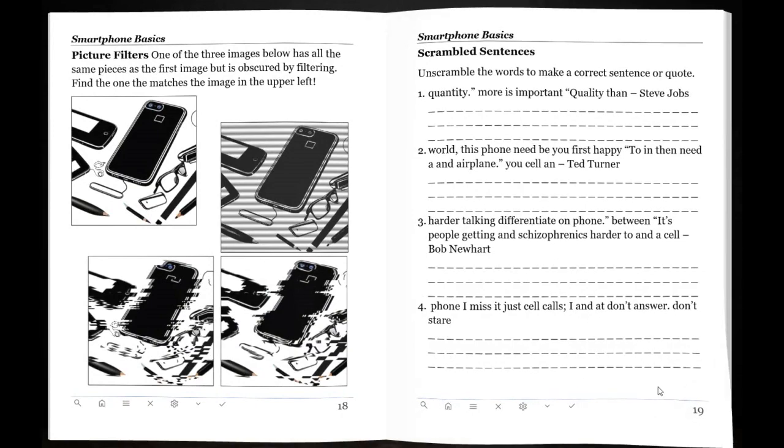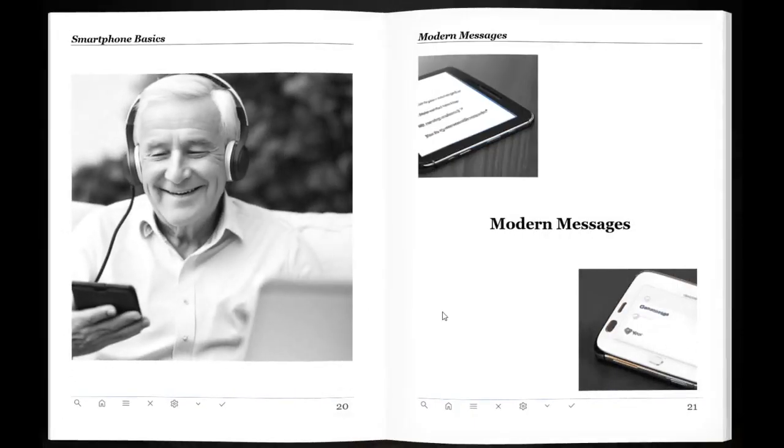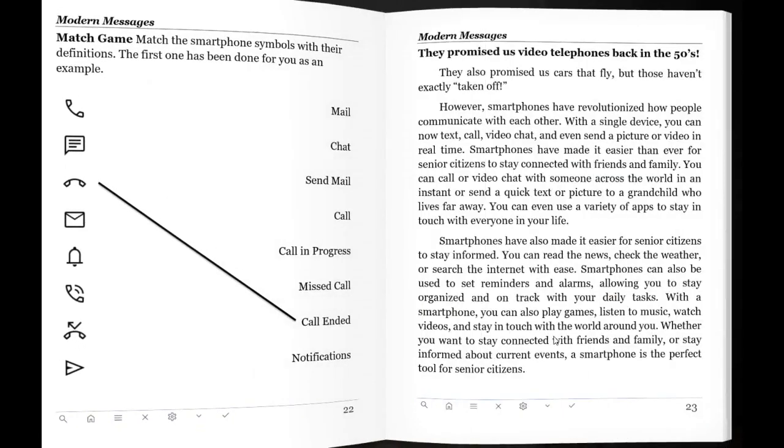Scrambled sentences, picture filters, figure out some differences there. Can you rewrite those in there? So then it goes to the next chapter of kind of a topic.